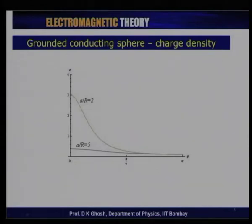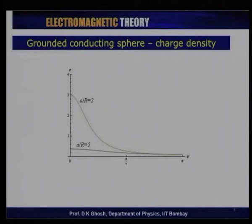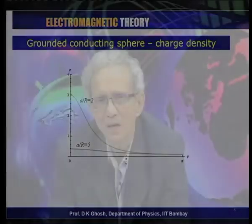Looking at the charge density expression: as we are closer, a/R = 2 means the object charge is closer to the conducting surface compared to the situation where a/R = 5 — which is five times the distance. As expected, the angle θ = 0, the direction directly opposite to the object charge, is where the charge density is maximum.